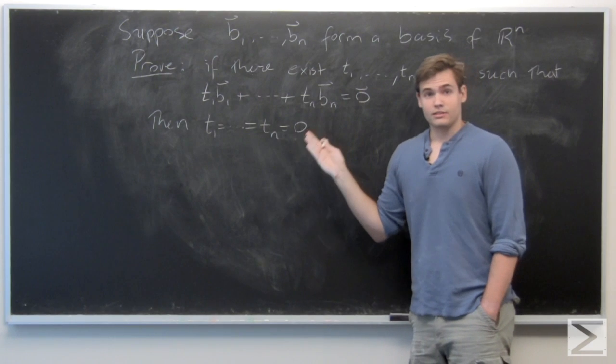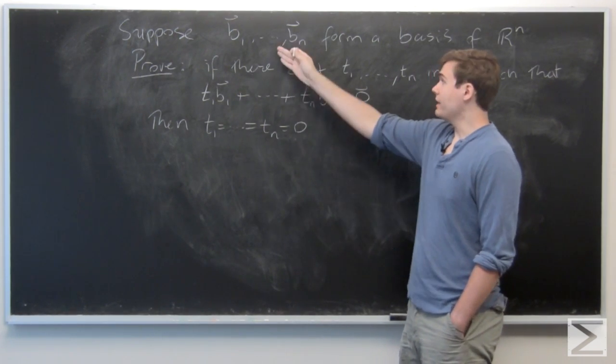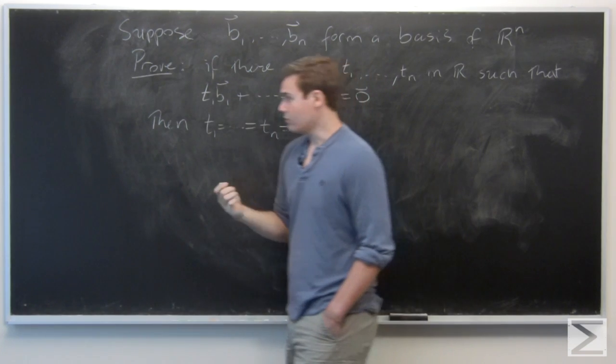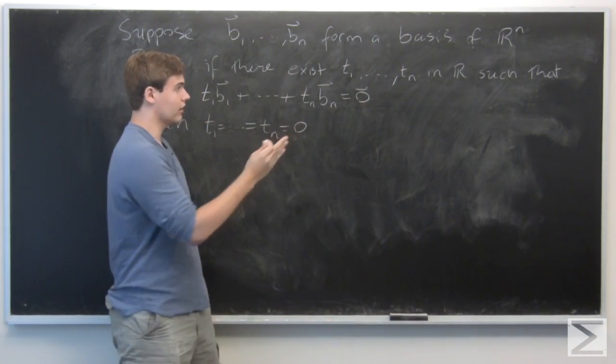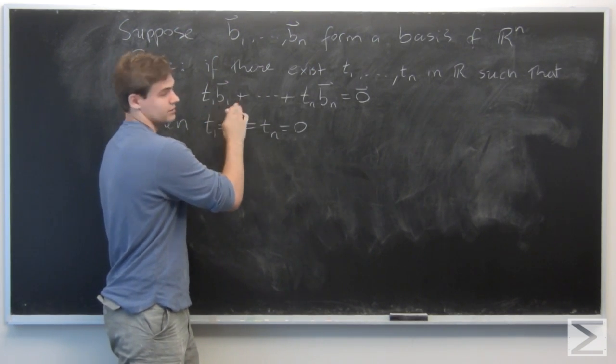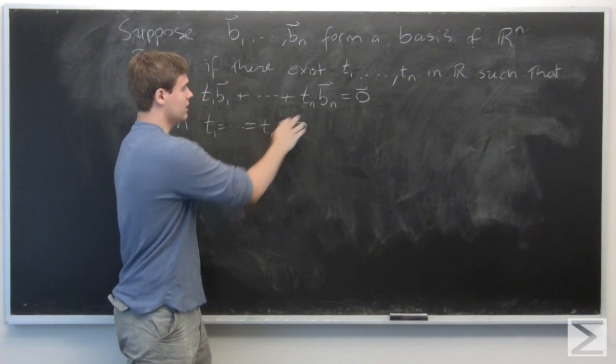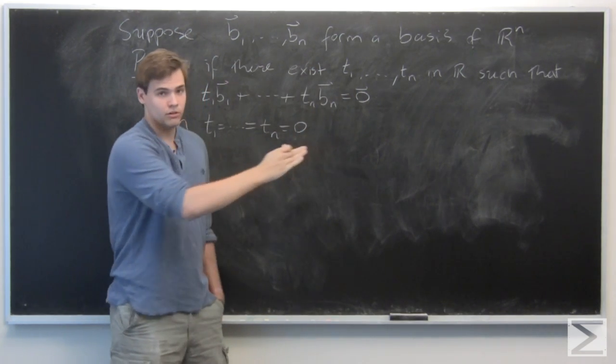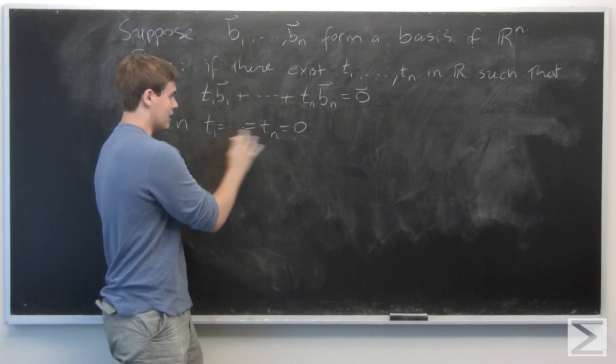So the statement itself is, given any basis, say B₁ through Bₙ of R^n, if you can find scalars T₁ through Tₙ in R, such that T₁ times B₁ plus dot dot dot, all of these, T sub n Bₙ equals 0, then all these constants had to be actually equal to 0.